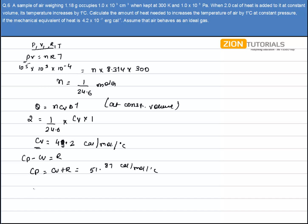Now we have to calculate the heat that is supplied to increase the temperature by 1 degree Celsius. So at constant pressure, Q is given by n Cp ΔT.